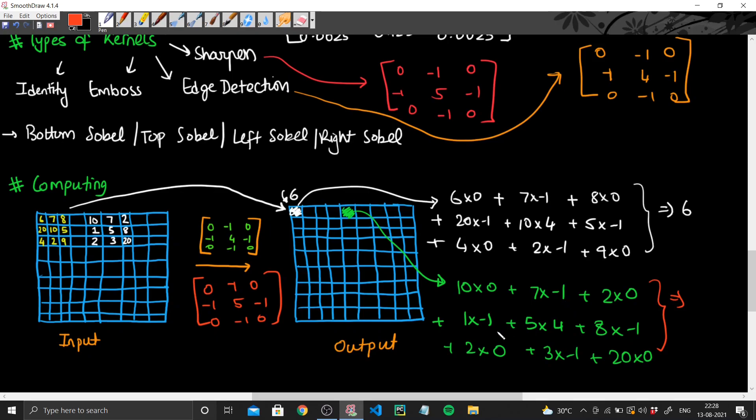And if we solve this, we get minus 7, minus 8, minus 16, minus 19, plus 20, so 1. So this value will be 1 after I apply my edge detection kernel on this matrix.